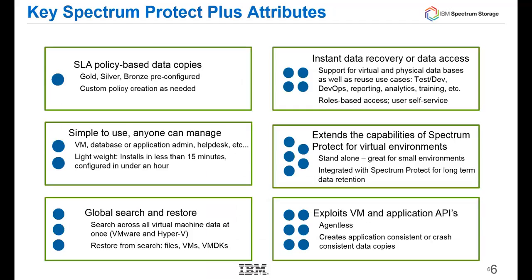Spectrum Protect Plus is service-level agreement-based, so you can assign gold, silver, bronze, or your own custom policy to your data so that it's getting protected, backed up, and utilized as it should be. It's simple to use and manage — you can seamlessly access your virtual machines, databases, and applications — and it will be automatically installed by the IBM Spectrum Protect Plus and IBM Cloud service, so you won't even have to install it.